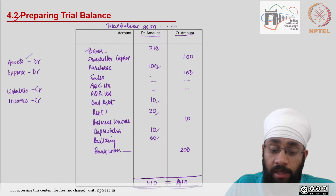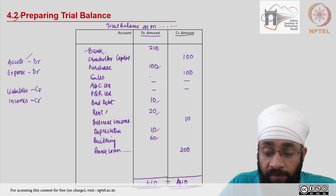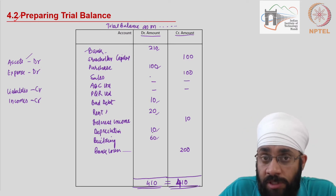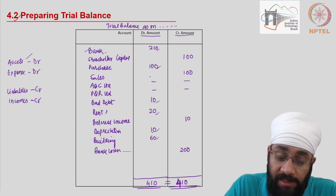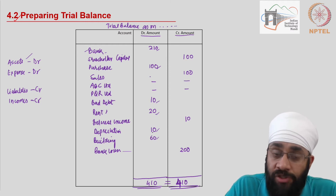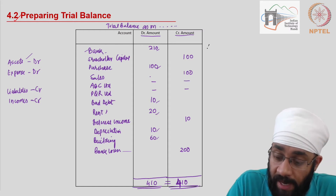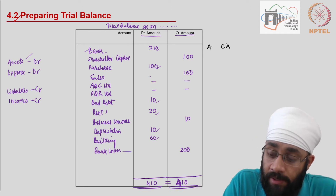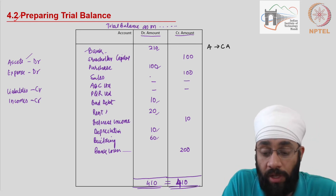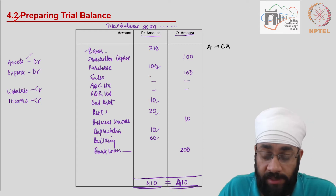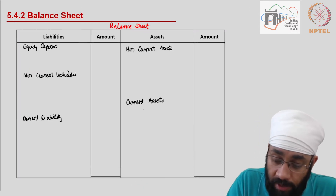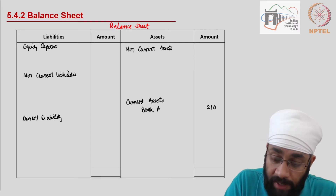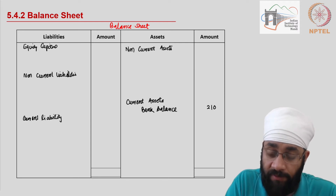The first thing to do is identify from the trial balance which items are incomes, expenses, assets, or liabilities. Incomes and expenses go to the profit and loss account; assets and liabilities go to the balance sheet. The bank account is an asset - specifically a current asset - so bank goes under current assets with an amount of 210, representing the bank balance at the end of the year.